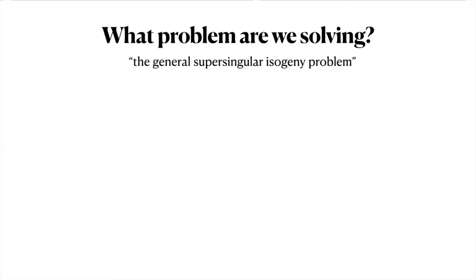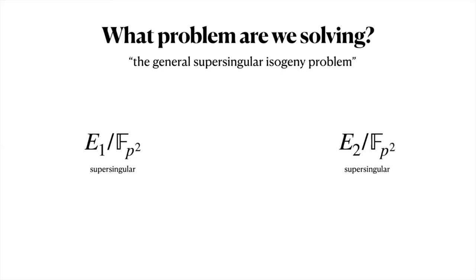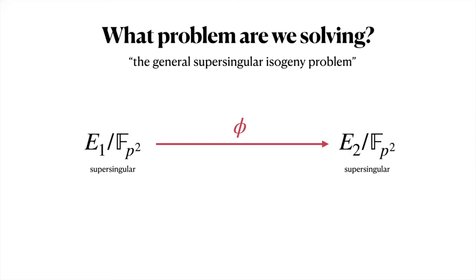The general supersingular isogeny problem is the foundational problem in isogeny-based cryptography, and it's believed to be secure against both classical and quantum computers. Given two supersingular elliptic curves defined over F_p², it asks us to find an isogeny between them. Note that we do not assume the knowledge of any torsion points or that we know the degree of the isogeny. This makes the problem substantially harder, as shown independently by Castryck and Decru and Maino and Martindale in their recent papers giving polynomial attacks against the key exchange SIDH or the encryption scheme PSYCH.